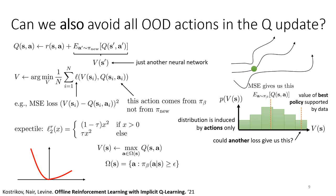Formally, what the expectile loss is doing is training the value function to be the maximum of the Q function over all actions within the support of the behavior policy. Any action out of support won't appear in the training set and won't participate in the loss. So essentially we're regressing to the best action we've seen at states similar to this state. This is not just copying the best behavior in the dataset — we're doing this at every state separately, combining the best things across all states, which could result in a final policy much better than the best trajectory seen in the data.